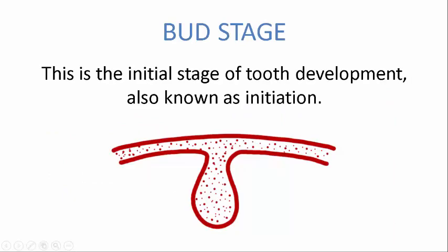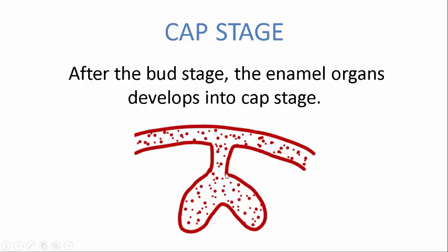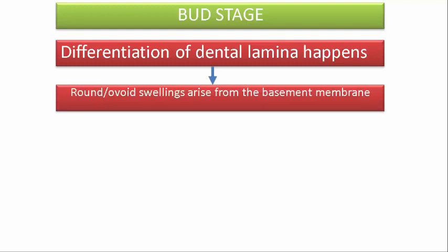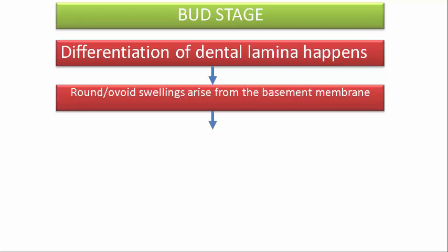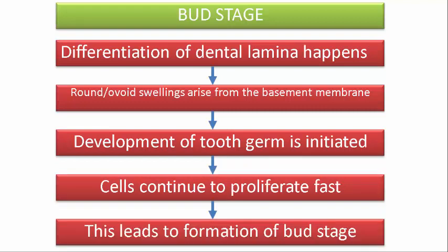The bud stage is the initial stage of tooth development, also known as initiation. This is the enamel organ and this is the epithelium. In the bud stage, there is differentiation of the dental lamina, then round or ovoid swellings arise from the basement membrane at the positions of the deciduous teeth, the development of the tooth germ is initiated, and the cells continue to proliferate rapidly, leading to the formation of the bud stage.